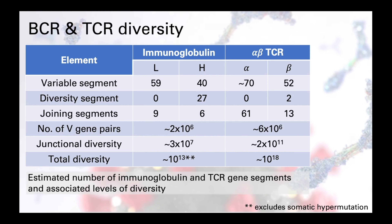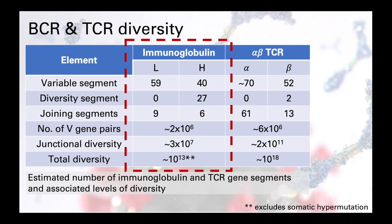Looking at the immunoglobulin columns, we have approximately 59 V segments in the light chain and 40 in the heavy chain. We don't have D segments in the light chain but have 27 in the heavy chain, along with 9 and 6 joining segments in the light and heavy chain respectively. These random combinations would only generate about 2 times 10 to the 6 different variable gene pairs, which is just not enough. So we have the process of junctional diversity, which exponentially increases diversity, giving an estimated overall diversity in the order of 10 to the 13 different combinations — and diversity in antibodies is even higher due to somatic mutations.